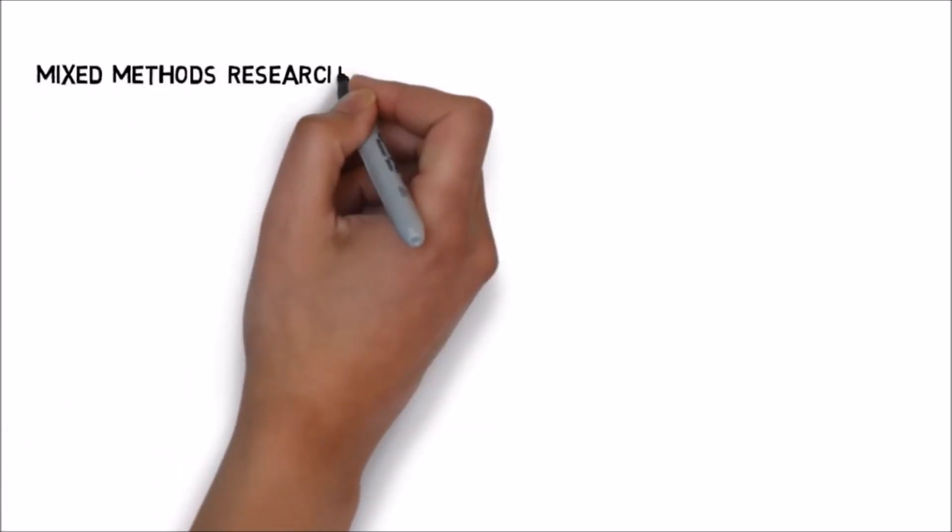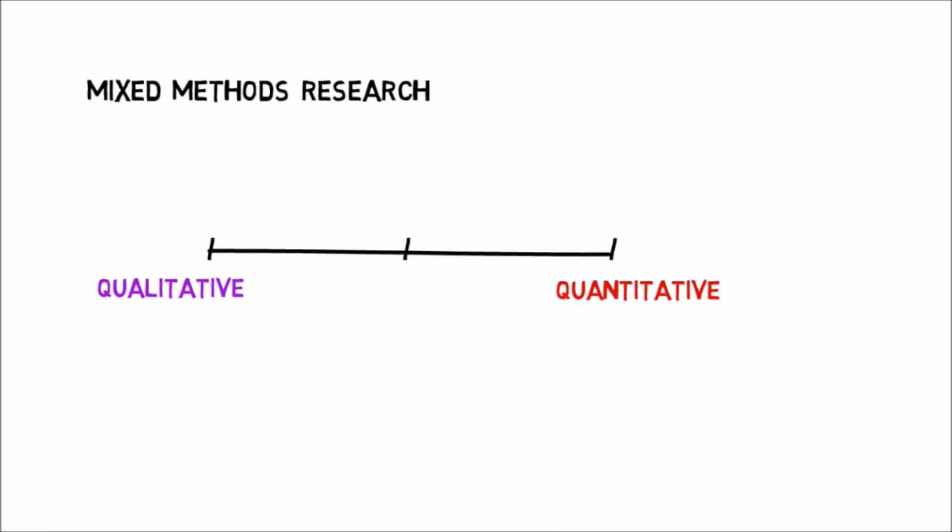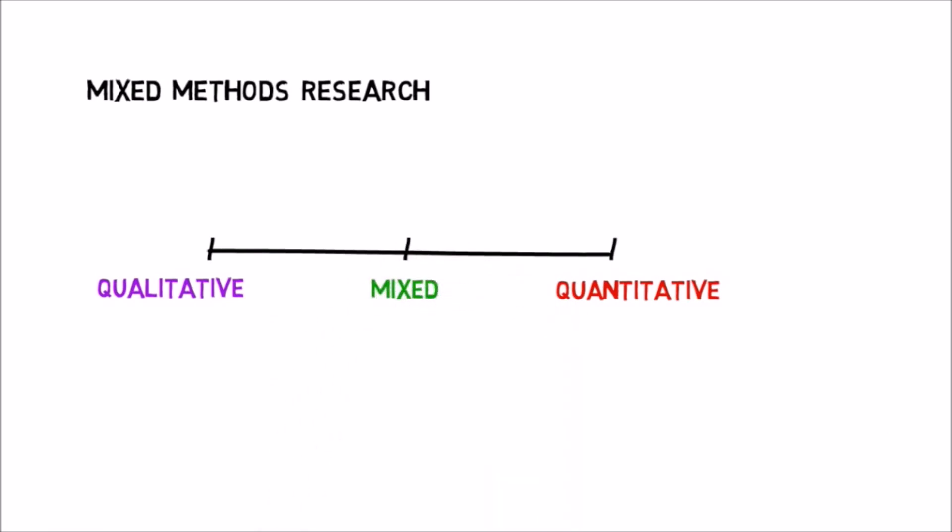Mixed methods research involves combining quantitative and qualitative research. It takes a more pragmatic approach whereby the type of research used should be based on what will best help you answer your research question. The research required will generally fit somewhere on this continuum.